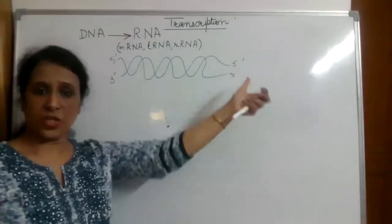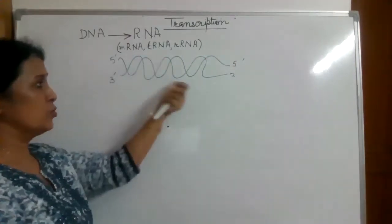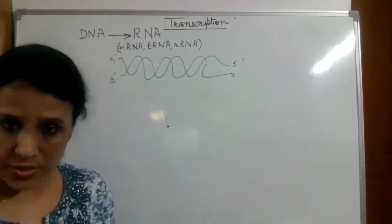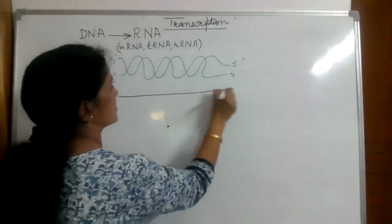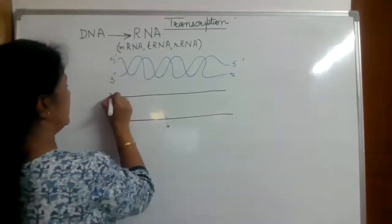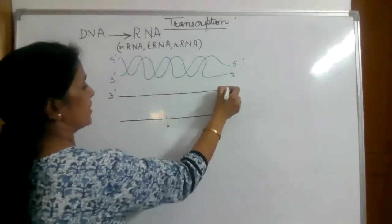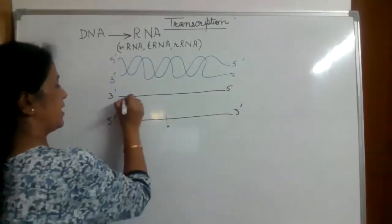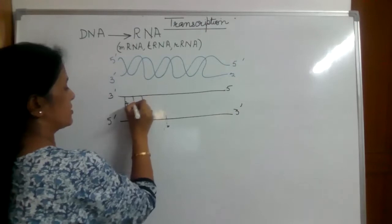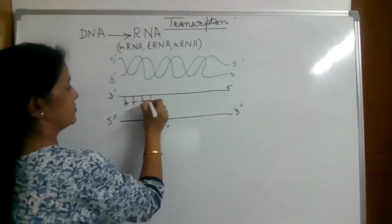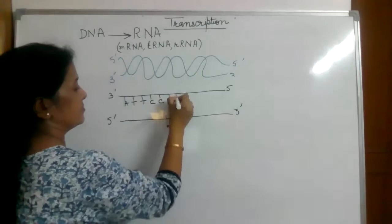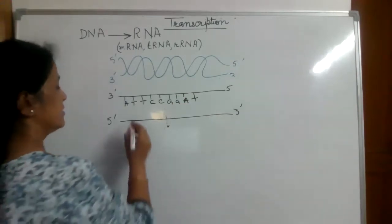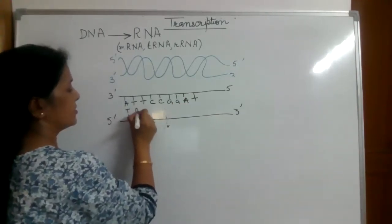This is a stretch of DNA having two strands — one is running in 3' to 5' and the other one is running in 5' to 3' direction. Let us simplify these strands like this. One is in 3' to 5' and the other one is 5' to 3', and let us have this sequence on this. Like this, and the sequence on the complementary strand is this.